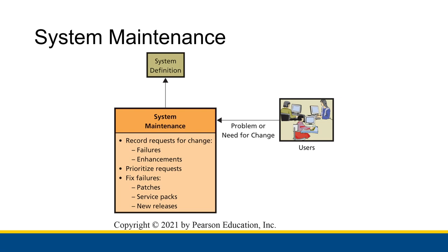When users are using a system and it doesn't work the way that it should, or the way that would be best for them for their job, they're typically going to make some sort of request for a change. You might have a bug report — a report that says this piece of the system failed while I was using it, and I can't do my work, or it was a temporary barrier. Or they might have a feature request saying it would be really helpful if we had this feature because it could provide this much more value.